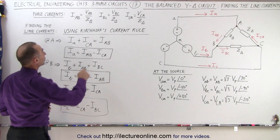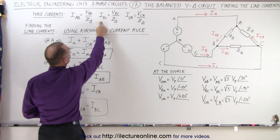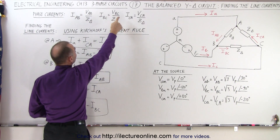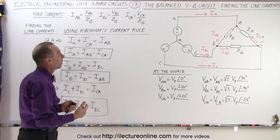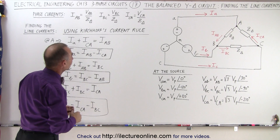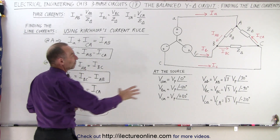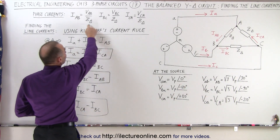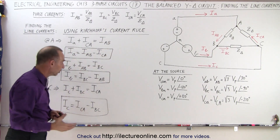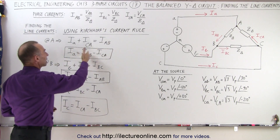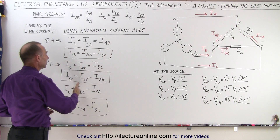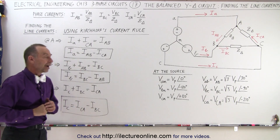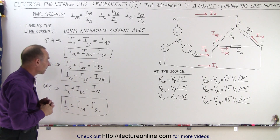Now notice that we already know how to find the three phase currents by knowing the voltages VAB, VBC, and VCA. Those are the line voltages, and they are derived from the phase voltages using the relationship shown here. If we know the impedances of the balanced load, then we can find the currents IAB, ICA, and IBC, and from that we can find the line currents IA, IB, and IC.